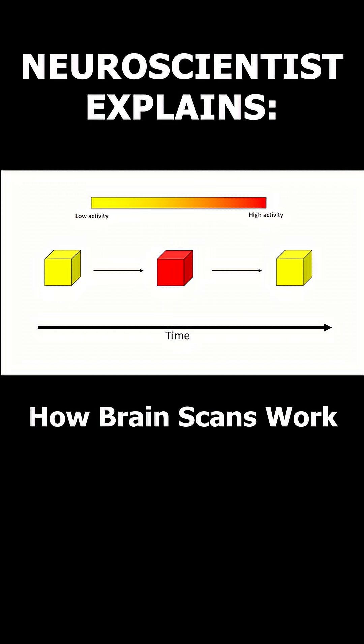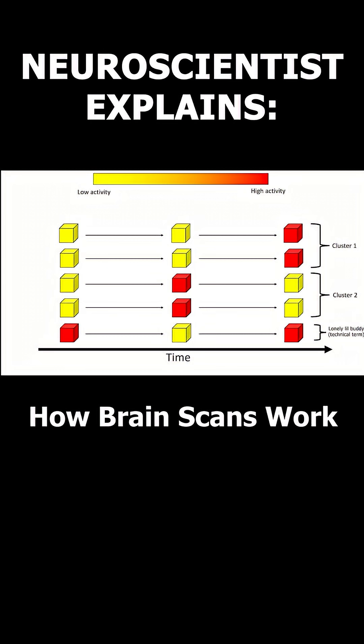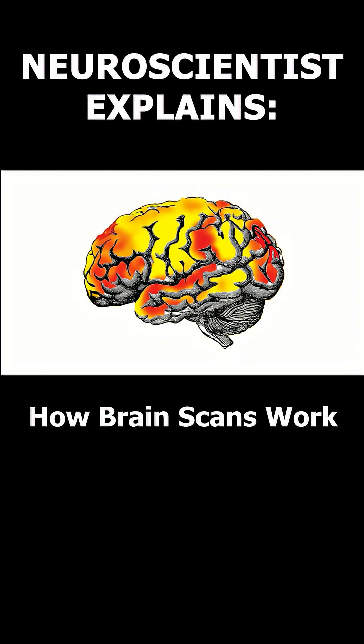We do this for every voxel in the brain and compare its activity to other voxels. Voxels near each other tend to have similar patterns of activity, so we end up with clusters of activity of different sizes and intensities, depending on what the person being scanned is doing.